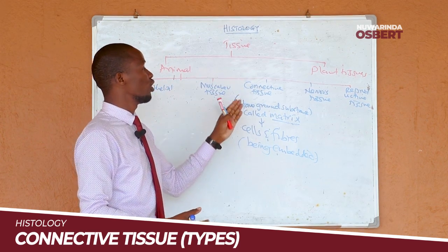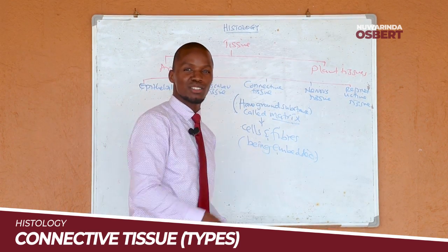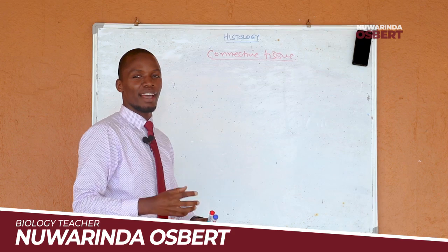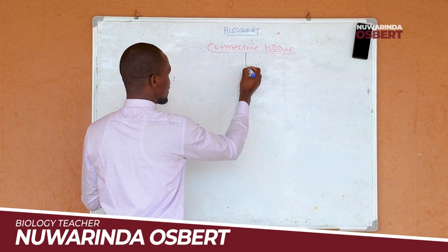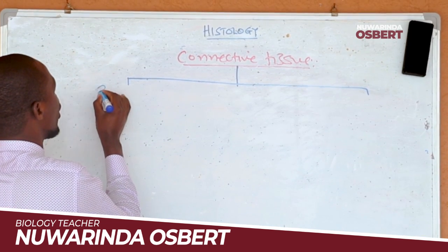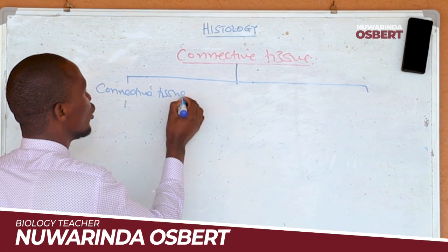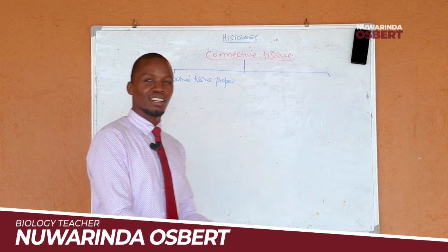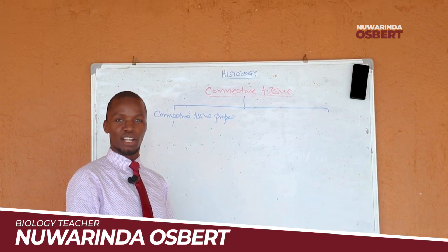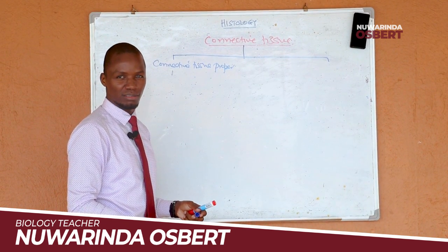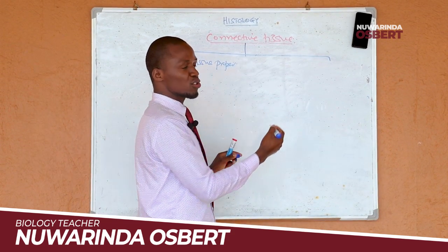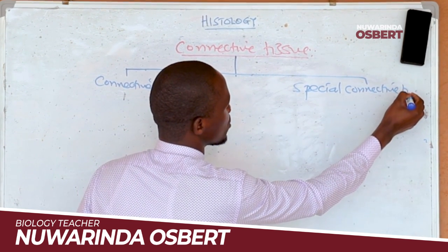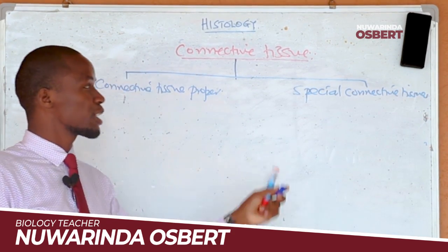In this episode, we are going to break down all these together. Connective tissues are broken down into two major categories. We have what we call connective tissue proper — the real connective tissues — and we have what we call special connective tissues. They are special in a way that we are going to see.